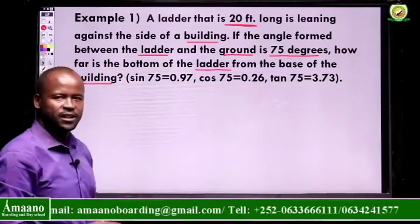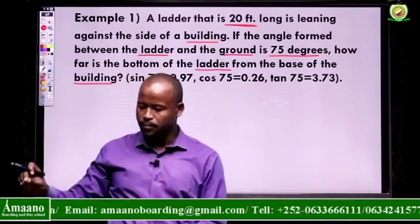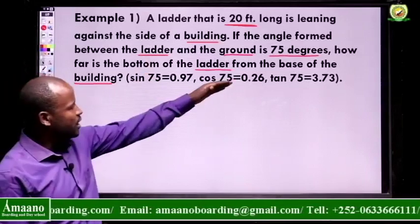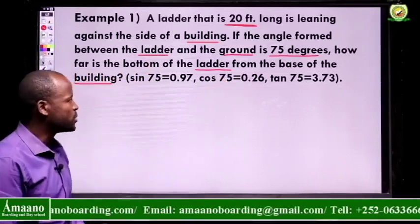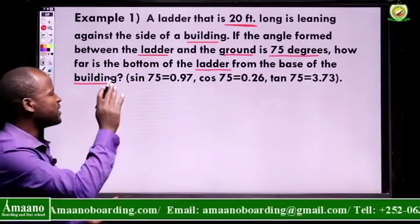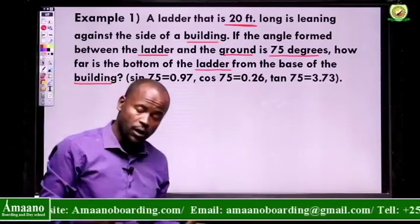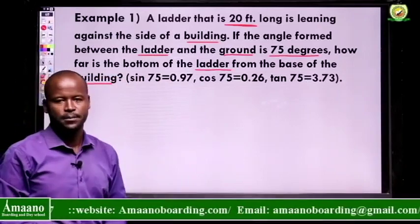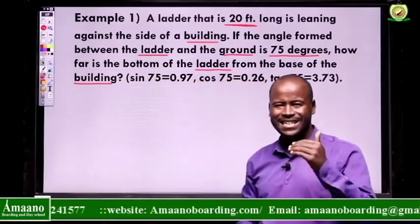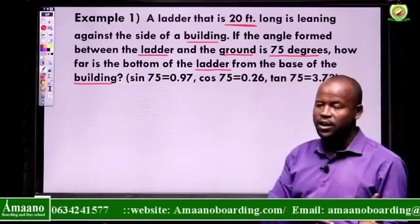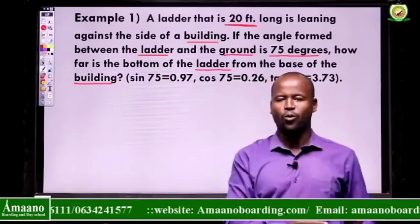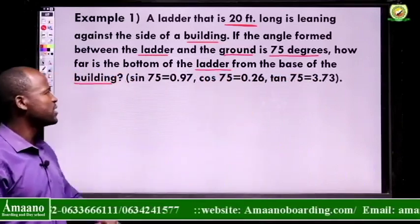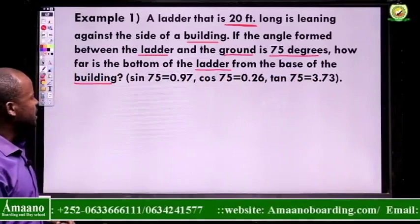We are asked to find the distance from the bottom of the ladder to the building. What is given: a 20-foot ladder and an angle of 75 degrees formed by the ground and the ladder. To solve word problems we follow steps: first, read and understand the problem; second, identify what is given and what is required; third, form an equation to solve the problem.